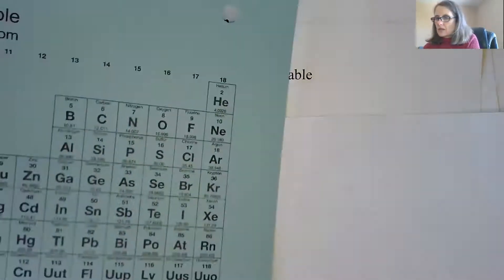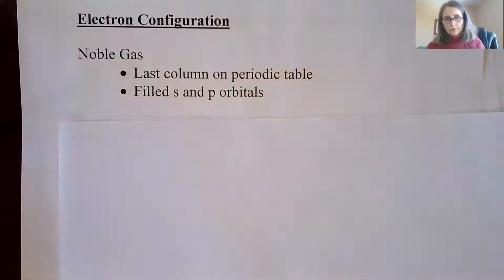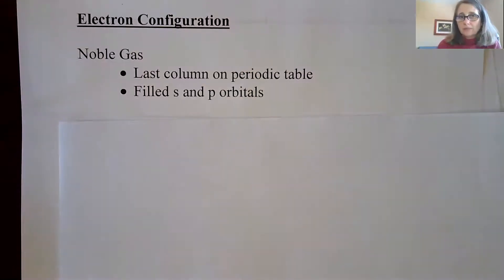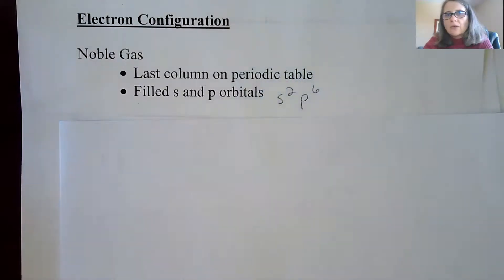The noble gases are in the last column of the periodic table: helium, neon, argon, krypton, and so on. They are the last column and they have what we call filled s and p orbitals. So they have an s² and a p⁶ is how you see their electron configuration.